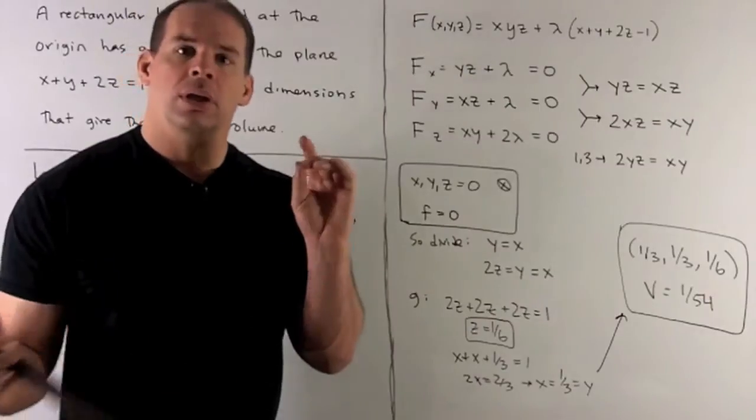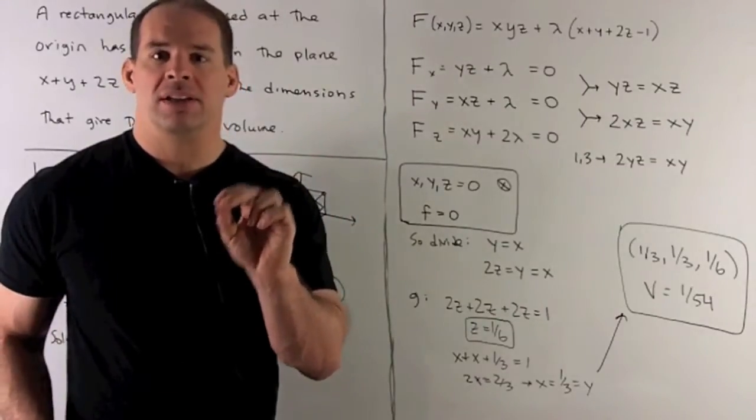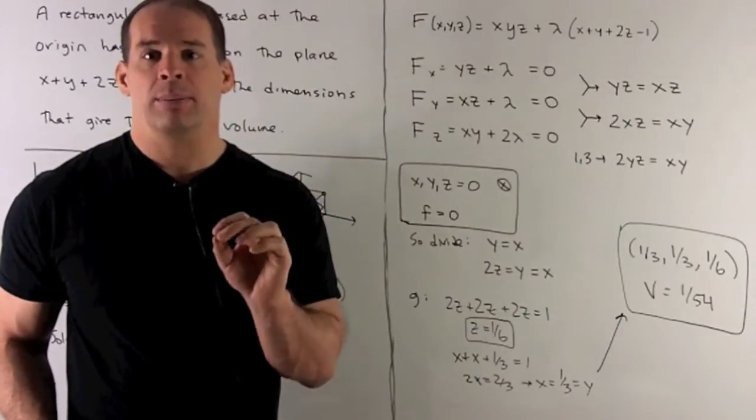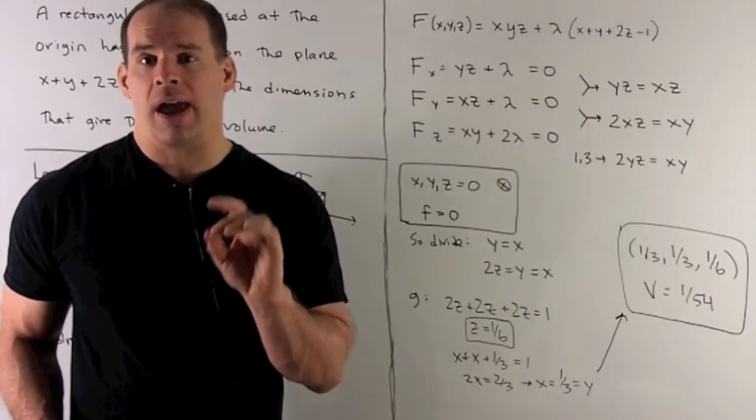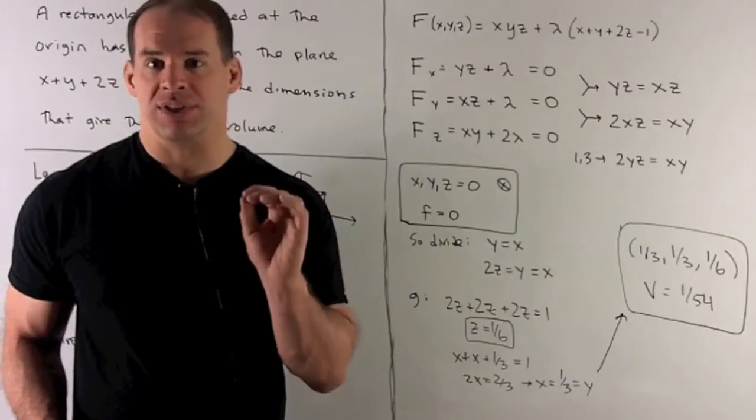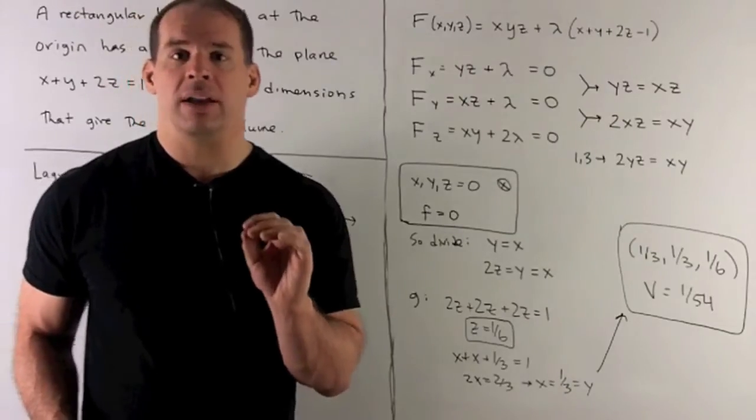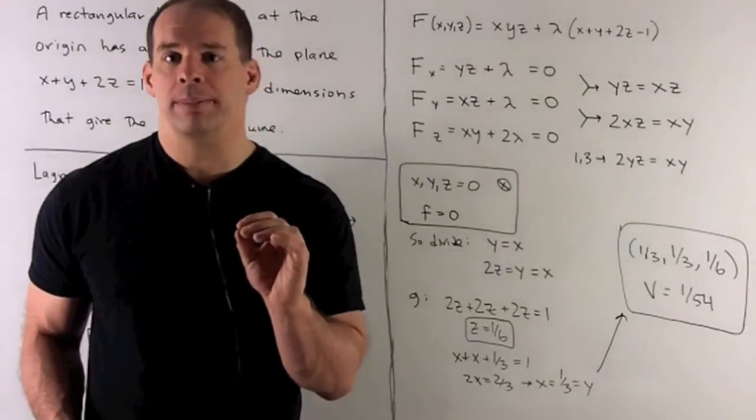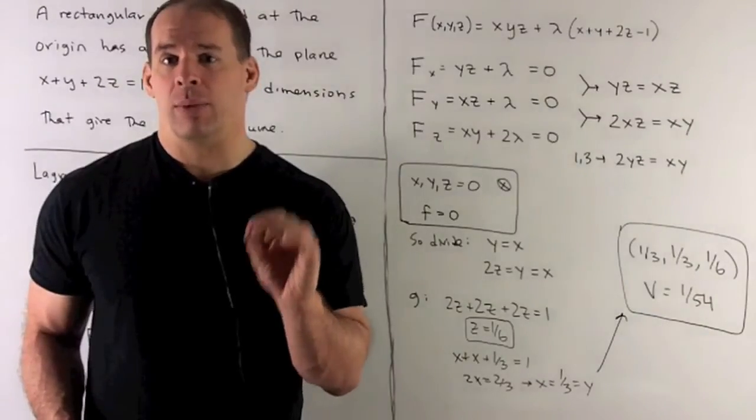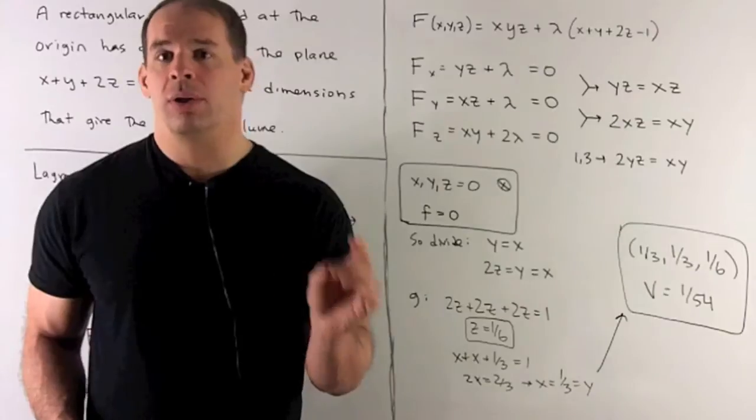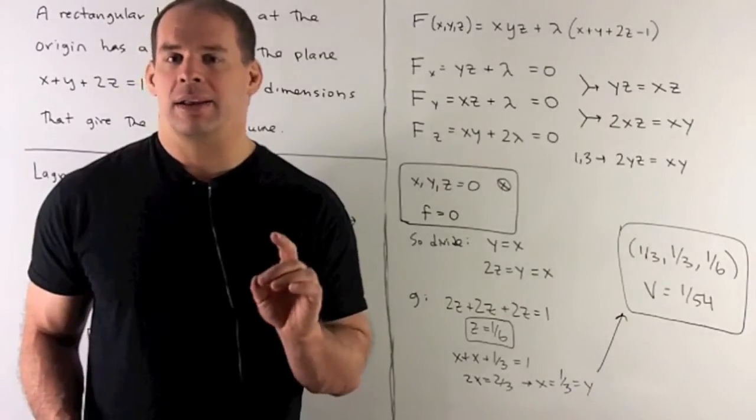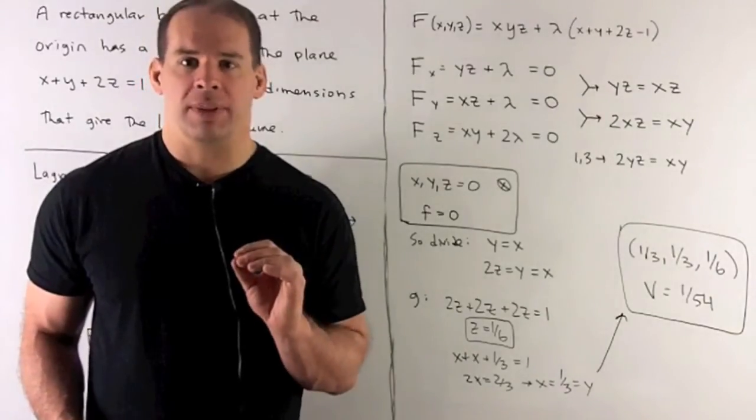Now, first thing you might want to do is divide through by x, y, and z, but you need to be careful. If you do that, you're going to throw away the solutions where x, y, or z are equal to 0. But if you go back and look at the original problem, we're trying to get a volume and we want to maximize it. If I let any of those quantities be equal to 0, the volume is 0, and we know that we're probably going to have something that's bigger than 0.